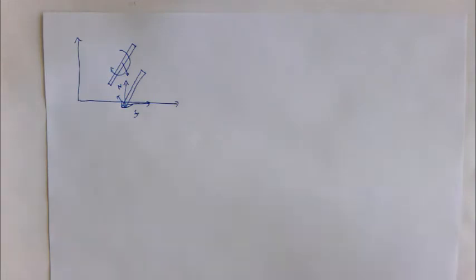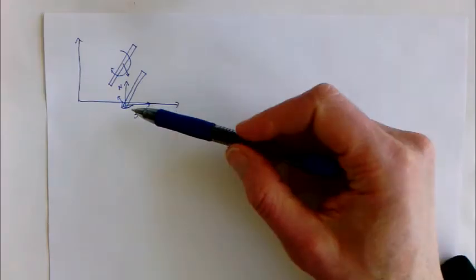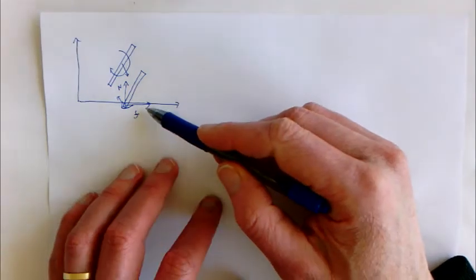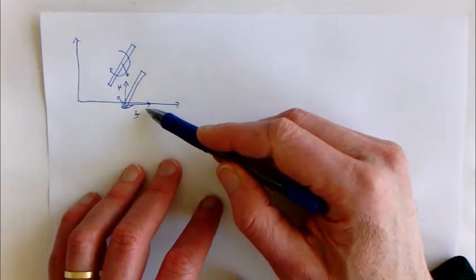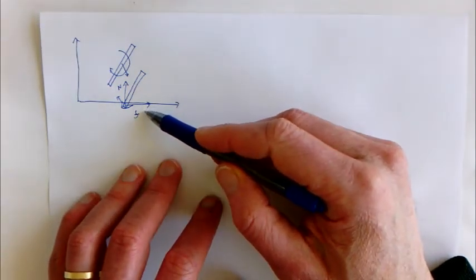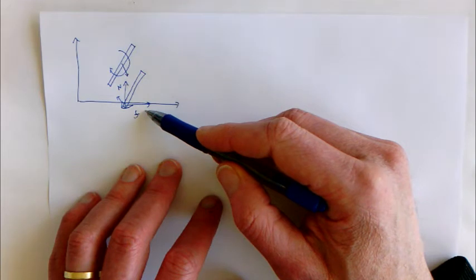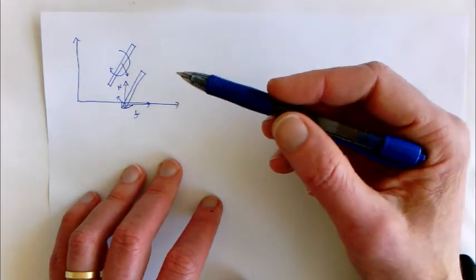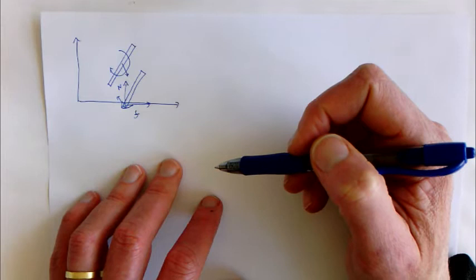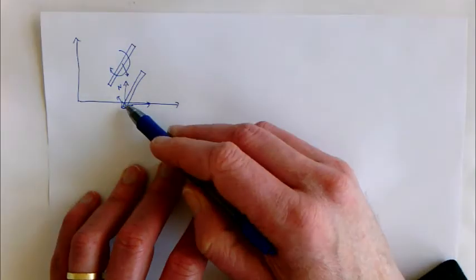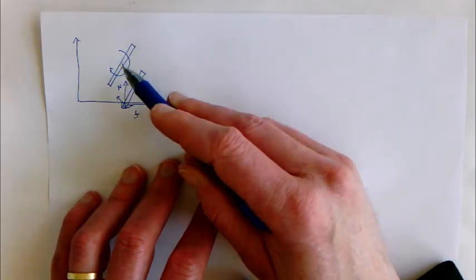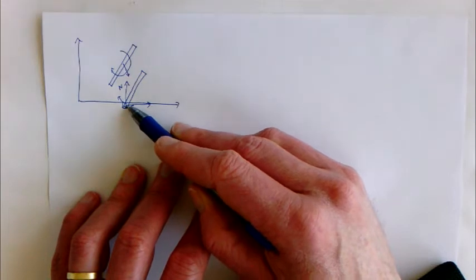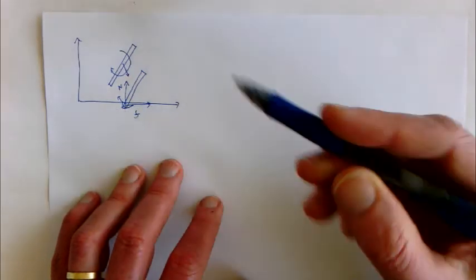That's qualitatively what the forces look like, but notice we don't actually know how big those forces are. Those are constraint forces — they're however big they need to be, and in particular they're going to be quite large over a quite short time scale. So instead of trying to think about differential equations, we're going to imagine this is instantaneous and use a before-and-after framing.